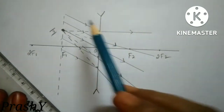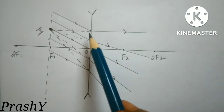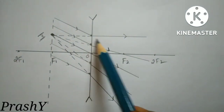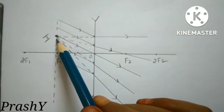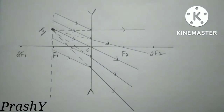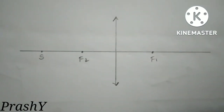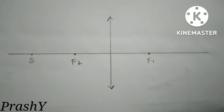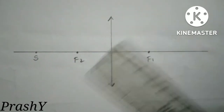The rays making some angle with the principal axis, after falling on the lens, diverge. When these rays are extended towards the back side we get the image on the focal plane. Now that you have understood how to draw the ray diagram, let us apply this knowledge to complete a diagram.